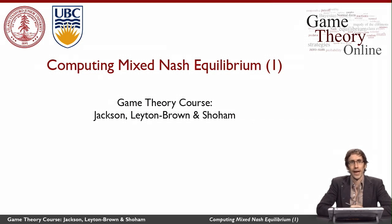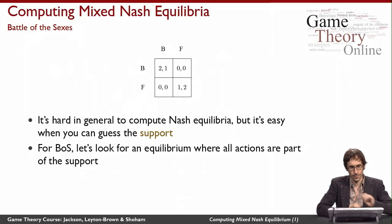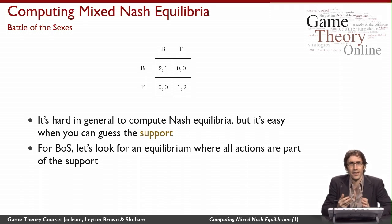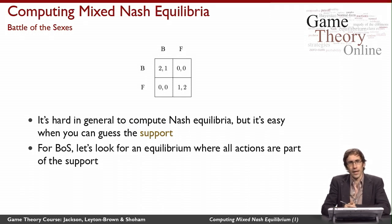In this video, we're going to look at how to compute the mixed Nash equilibria of a normal form game. In particular, we're going to go through the example of Battle of the Sexes. What you've seen so far about equilibria kind of suggests that it's really easy to come up with an equilibrium, but in fact, as games get big and general, sometimes it can be pretty tricky to find the equilibria of a game.